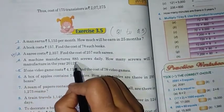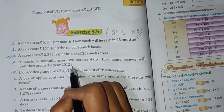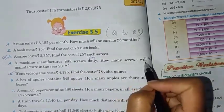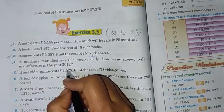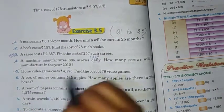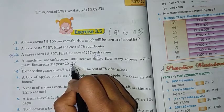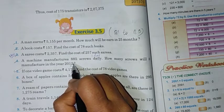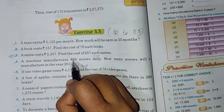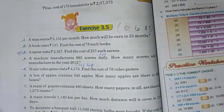Now move to next question, question number 4. A machine manufactures 885 screws daily. How many screws will it manufacture in the year 2012? Daily means one day. In one day it manufactures 885 screws. And how many screws it will manufacture in the year 2012? So we have to first find out how many days are there in 2012. One year is equal to 365 days, but now see here 2012 is a leap year. How do you know it is a leap year? Because 2012 is divisible by 4. If a year is divisible by 4, it is a leap year and it has how many days? 366 days. So in one day this number of screws are manufactured. In 366 days, we have to find how many screws are manufactured.